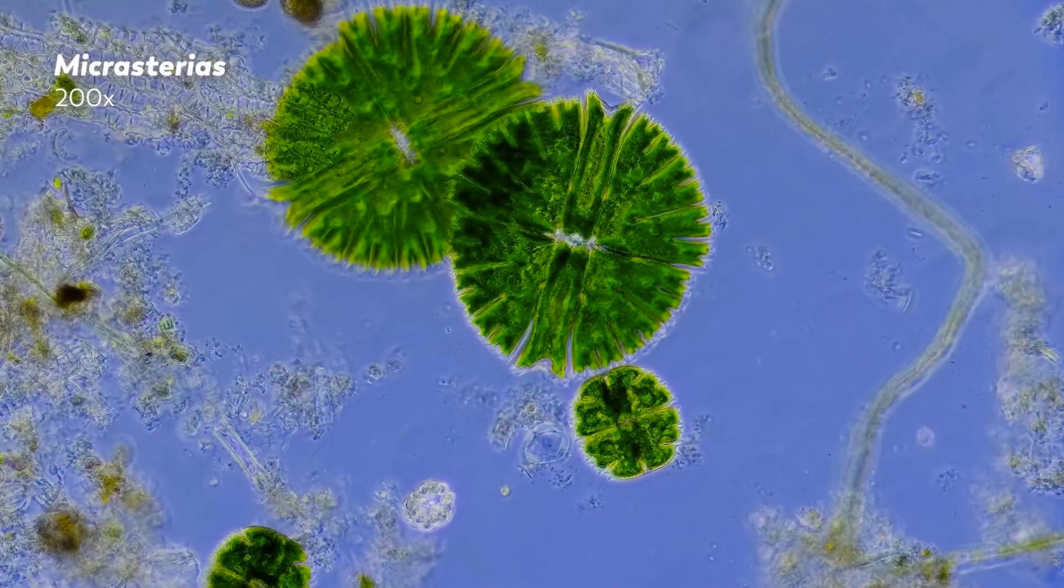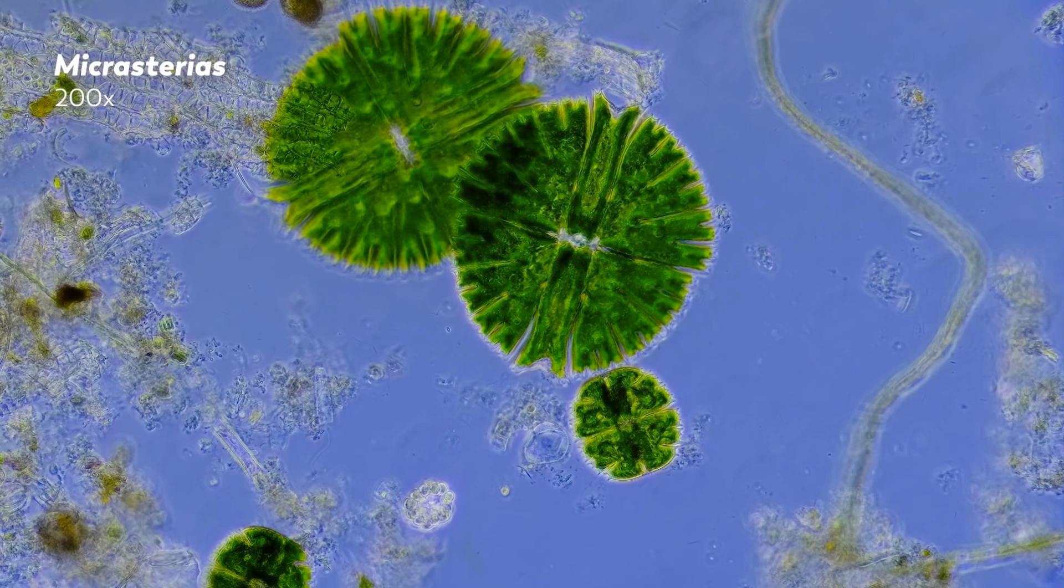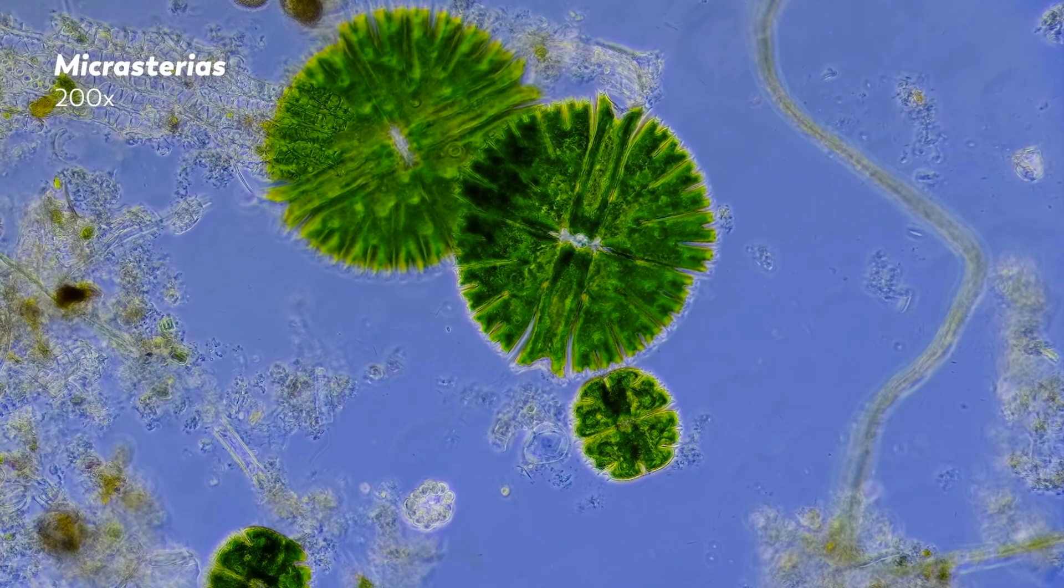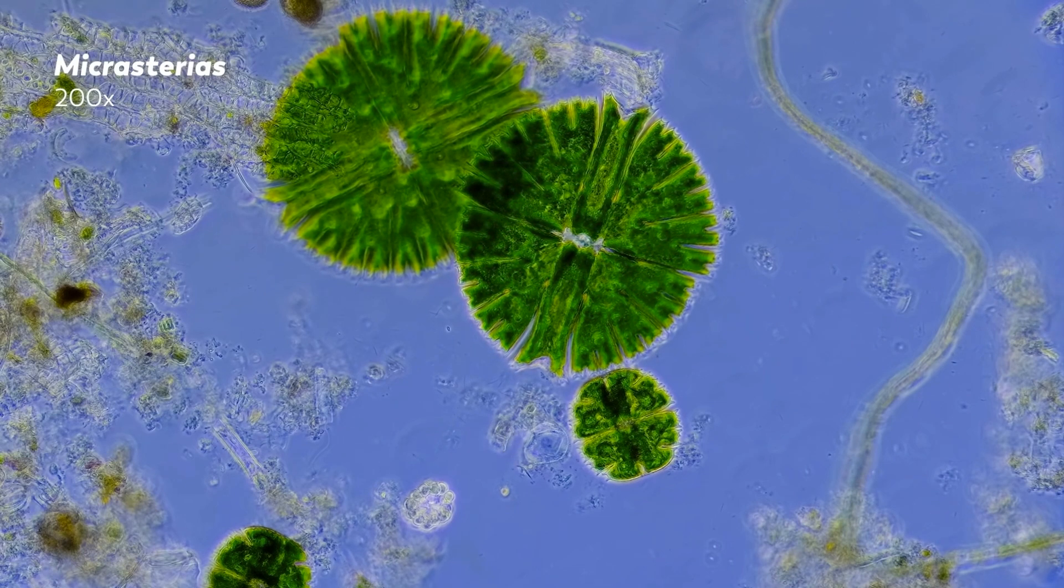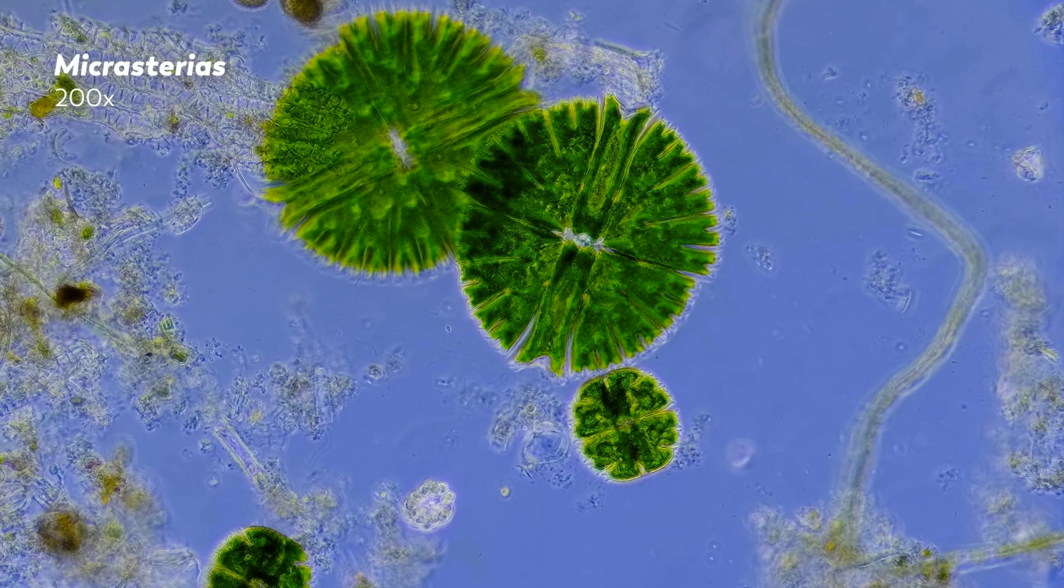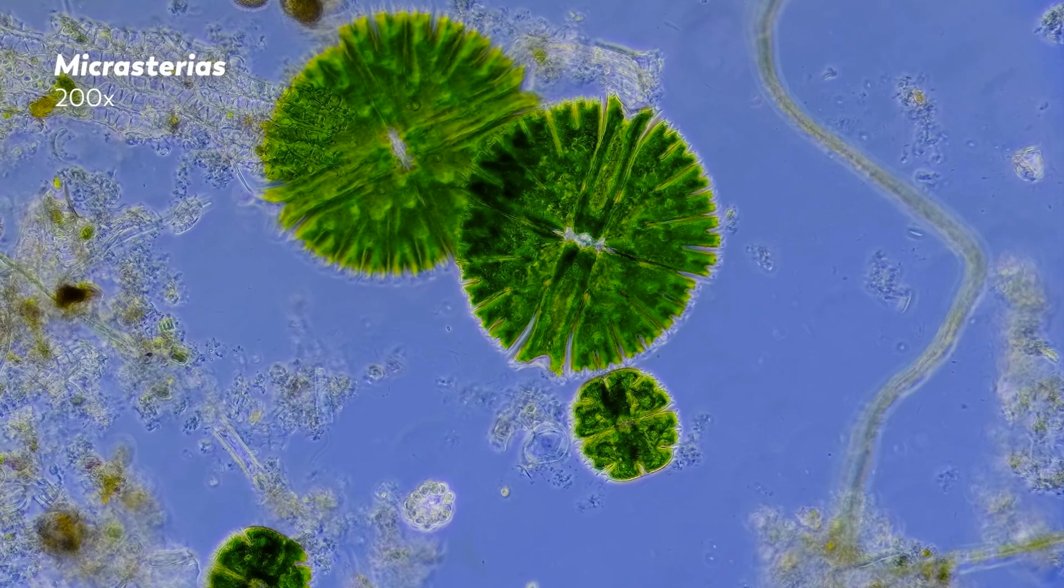Recently, over on Hank Green's channel, Journey to the Microcosmos, he asked the question: why are desmids symmetrical? What evolutionary advantage does symmetry give to these little single-celled algae? Today I'm going to argue that there is no evolutionary advantage for symmetry in desmids, just like there's no evolutionary advantage for the symmetry in a snowflake.